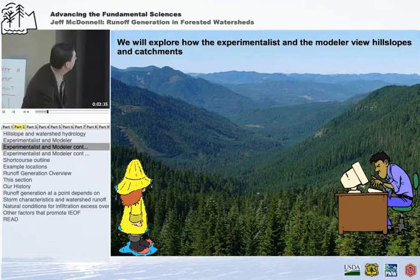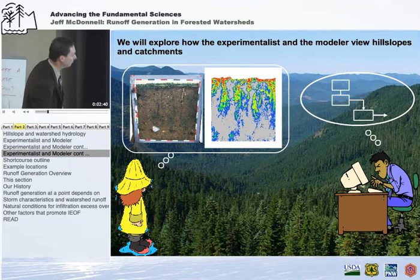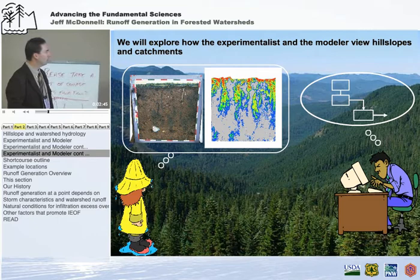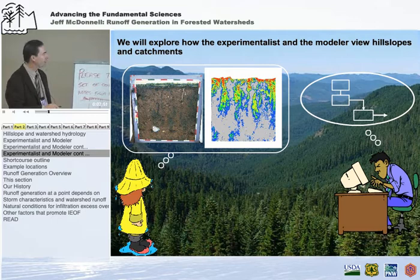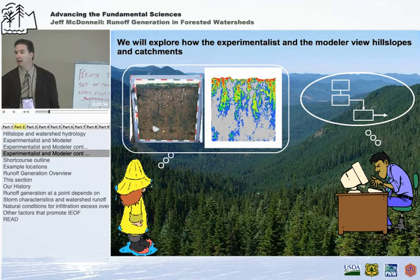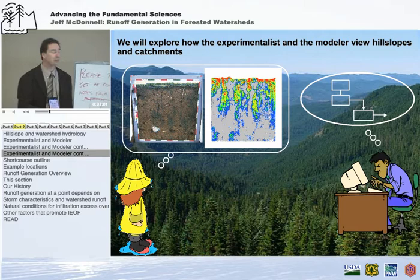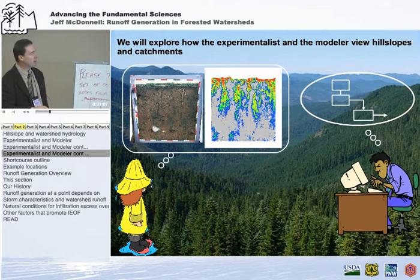The other thing we'll make passing reference to is how different scientists might view a catchment. An experimentalist might go out to a landscape and think, there's preferential flow and all of these interesting complexities in terms of how the runoff process might work. This might be based on their training in soil science — and I know there are soil scientists here who look at the world this way.